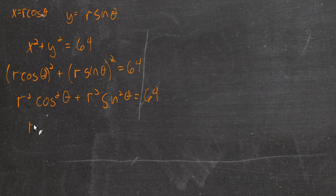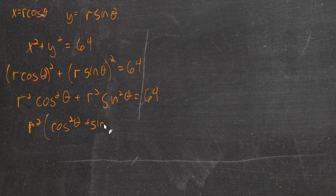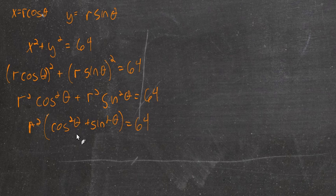r² cos² θ + r² sin² θ = 64. So now we can factor out an r². r² times (cos² θ + sin² θ) = 64.